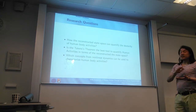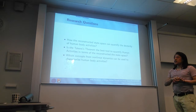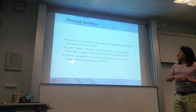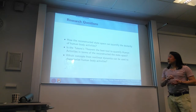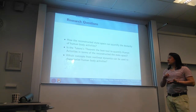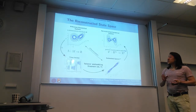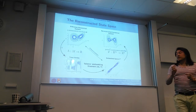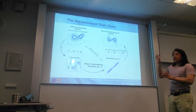So the main three questions for my research are: how can the reconstructed state space quantify the dexterity of human body activities? Is the Takens embedding the best tool to quantify human activities in terms of their reconstructed state space? And which concepts from non-linear dynamics can be used for human activity recognition?